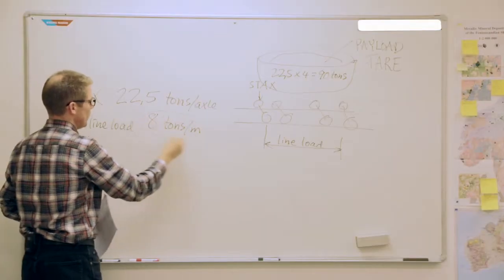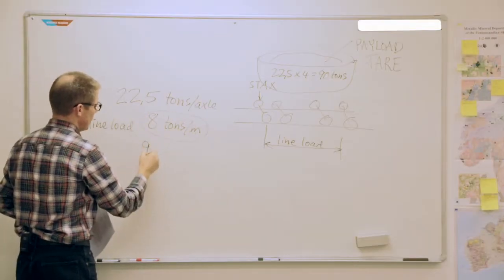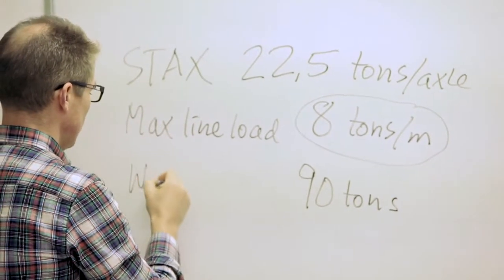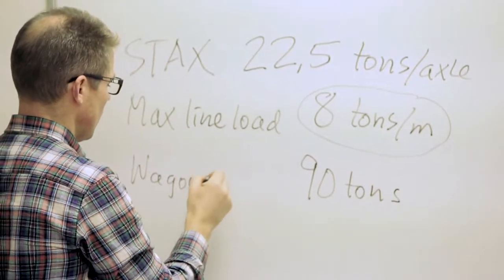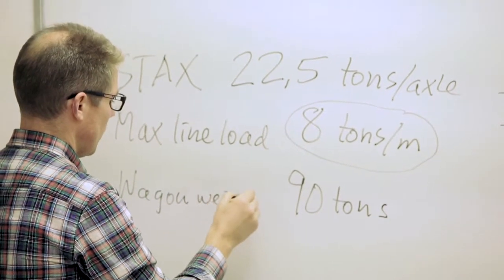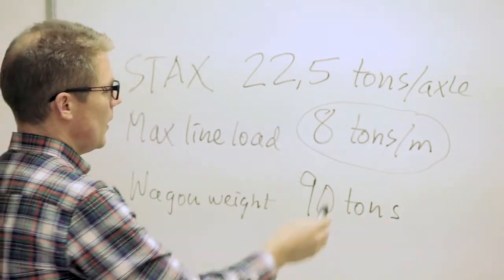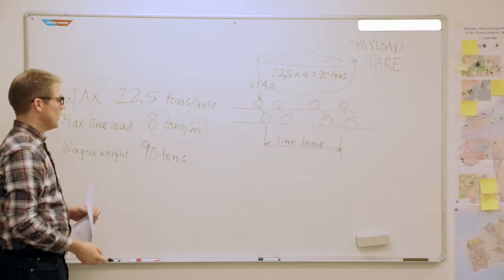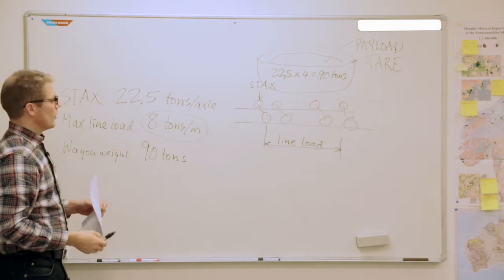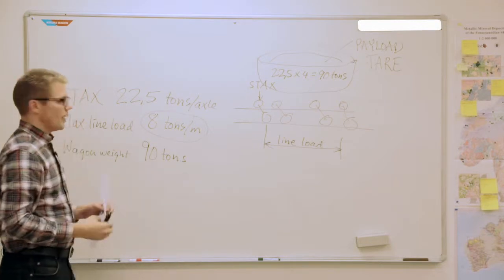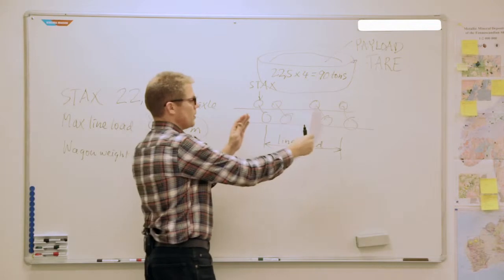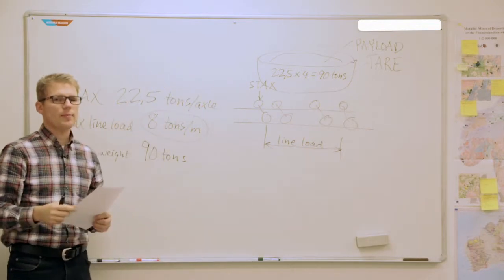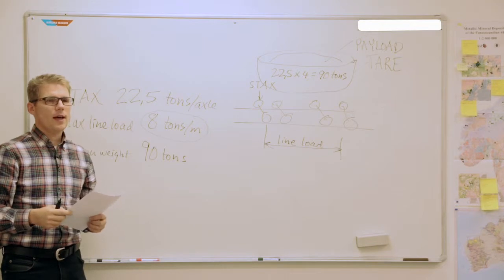The line load maximum is eight tons per meter, so this load of 90 tons has to be distributed on a length that's long enough so it's maximum eight tons per meter.